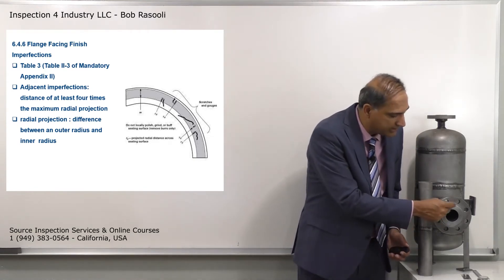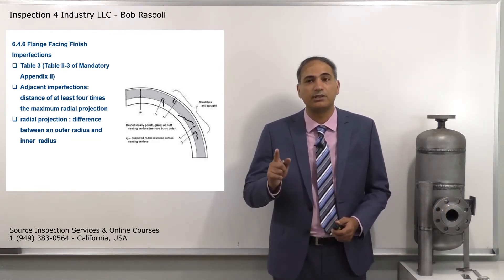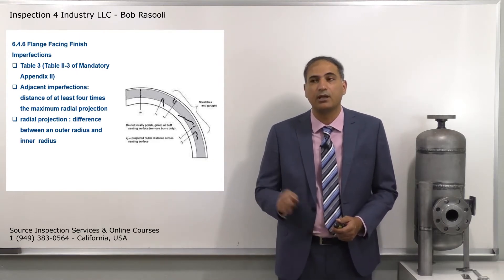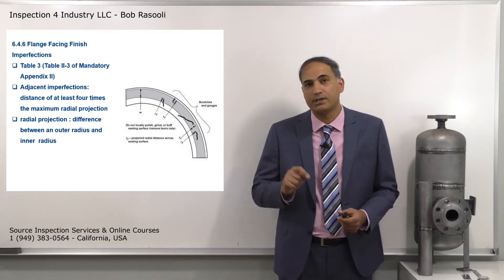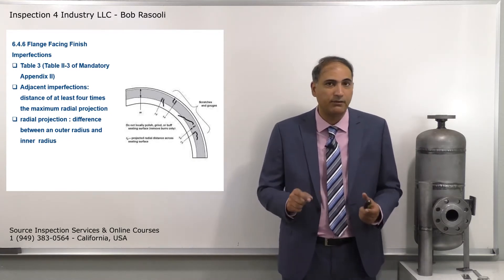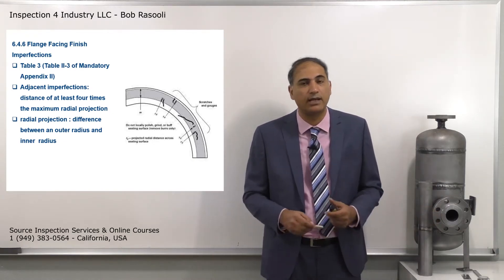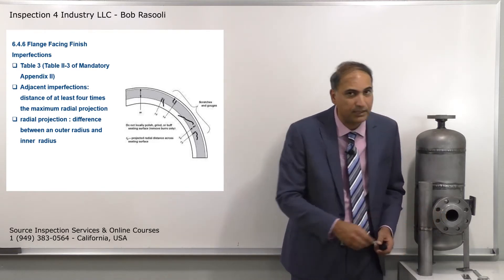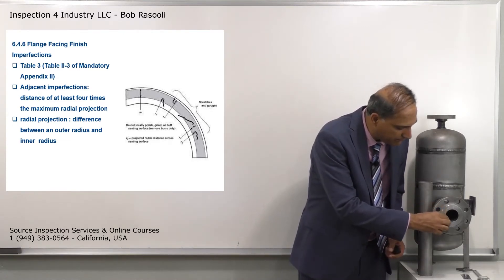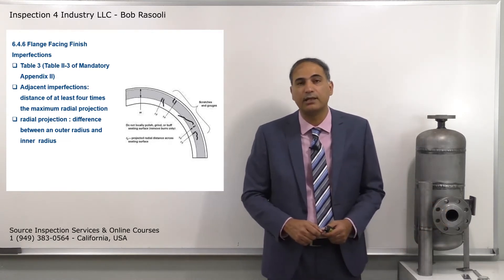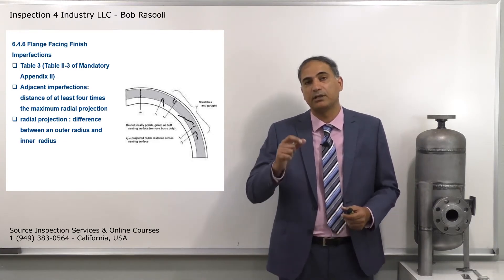When a cut goes through the serration perpendicularly, the inner to outer surface span gives a large radial projection. There's also an image on screen you can pause and focus on to see how this works. Cuts or scratches that pass through the serration get more radial projection, while cuts parallel to the serration give a much smaller radial projection and a more lenient acceptance criteria.